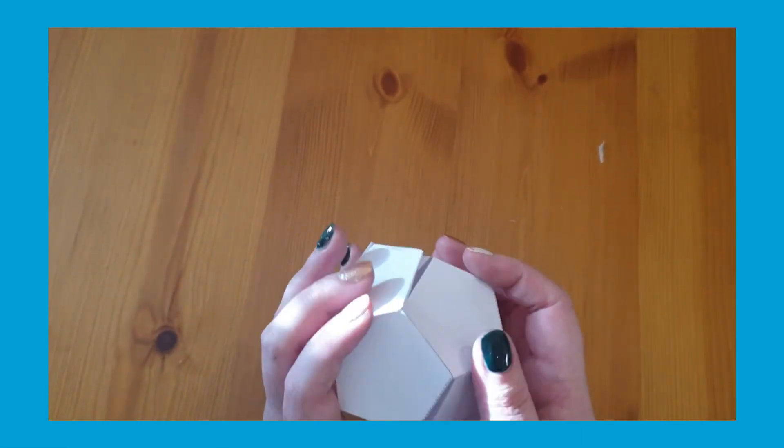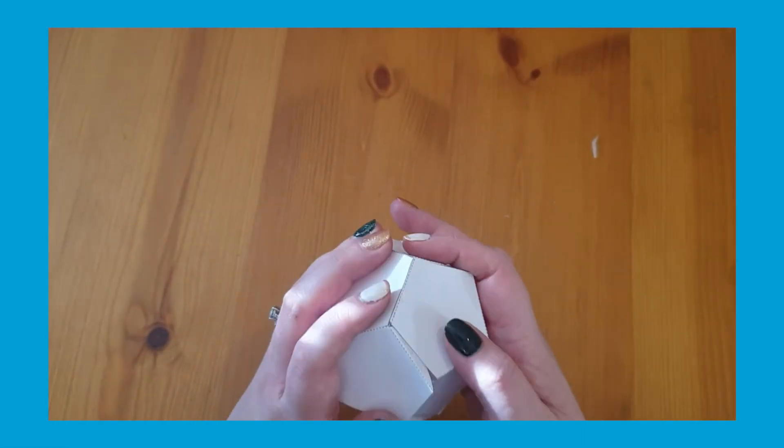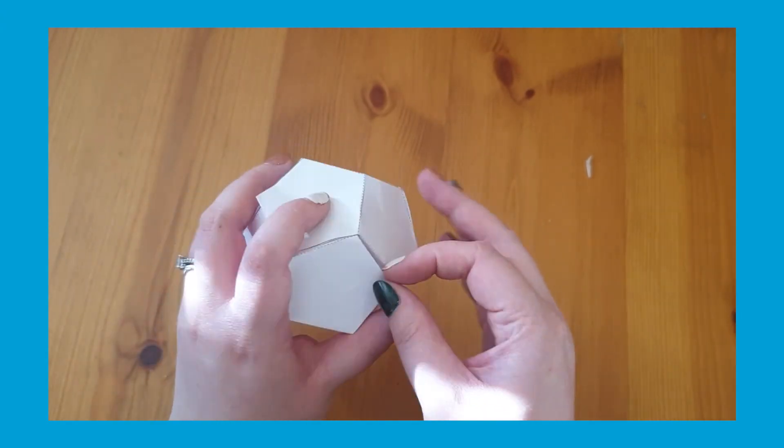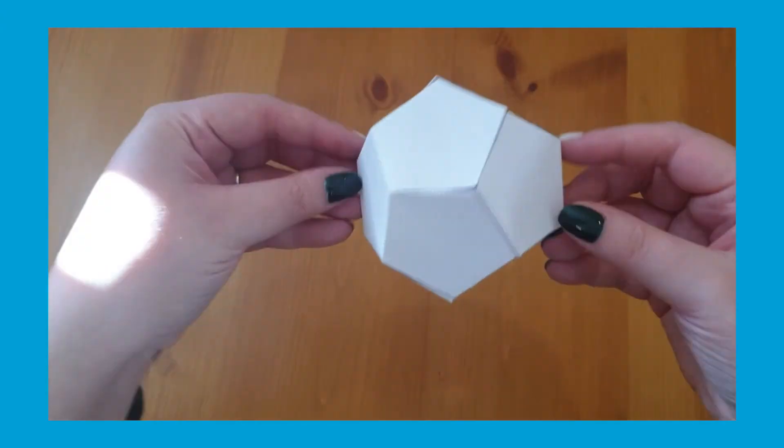Children will first come across dodecahedrons in their Key Stage 2 maths lessons, and like all 3D shapes, it's possible to assemble a dodecahedron using a net just like this. Best examples of dodecahedrons being used in real life are footballs and gaming dice in some board games.